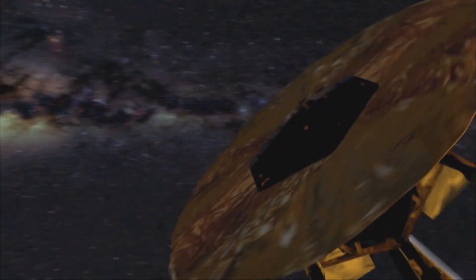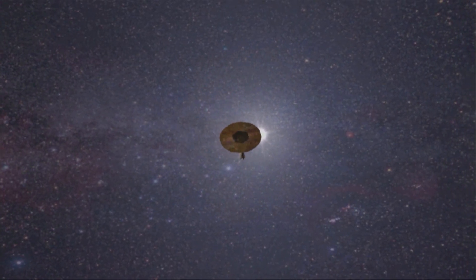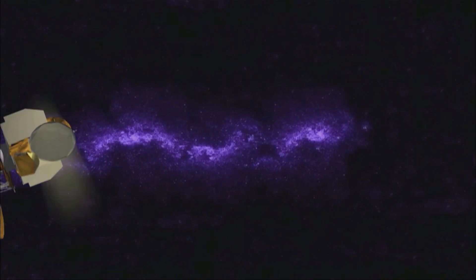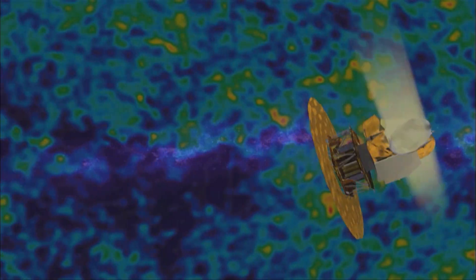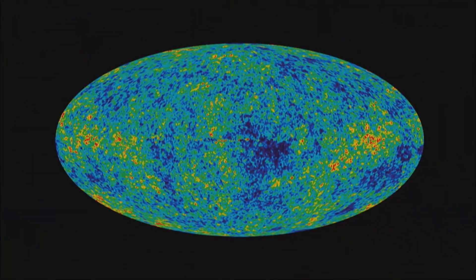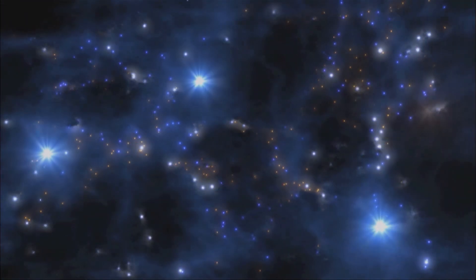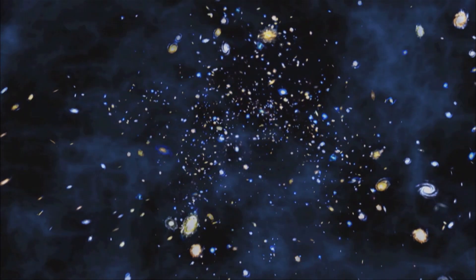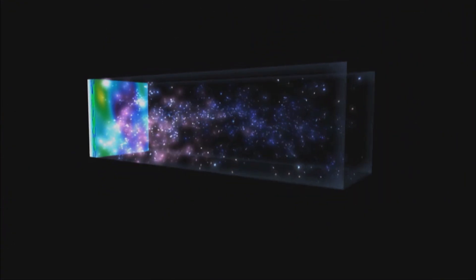Details of what the universe was like in its earliest times have come courtesy of a breakthrough observatory called WMAP. It found a blotchy pattern in a kind of radiation generated soon after the Big Bang. Astronomers believe this pattern is the origin of the spider's web structure they see in their telescopes. It defines the beginning point of Tiziana's simulation.